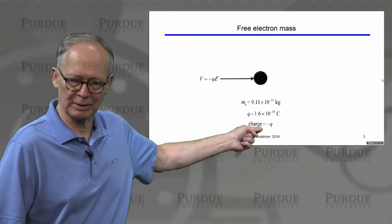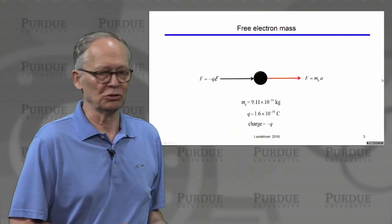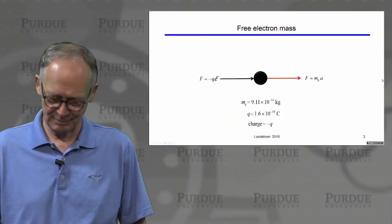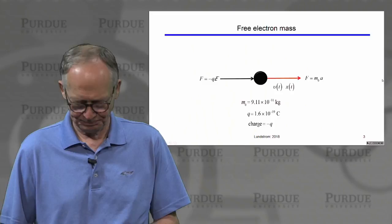If we exert a force, the electron accelerates. It behaves according to Newton's laws — force equals mass times acceleration — as long as we don't have relativistic effects. As the electron moves, we can compute its velocity and position as a function of time, all with Newton's laws of motion.